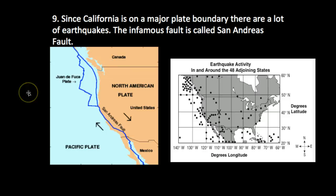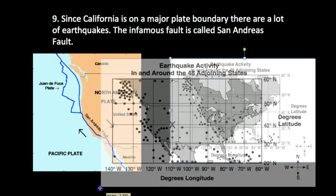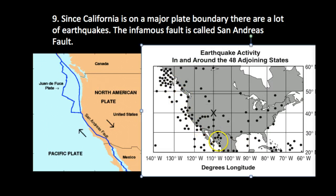Number nine: since California is on a major plate boundary — that's where two plates meet — we have the Pacific plate and the North American plate, and they happen to be a transform boundary where they slide. There are a lot of earthquakes, as you can see here. Tons of earthquakes happen because it's right here on the San Andreas Fault. You could zoom in with all that data and see very clearly that there are tons of earthquakes on this fault.